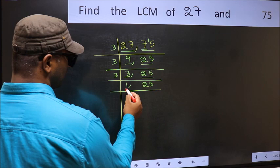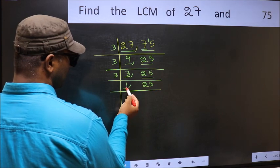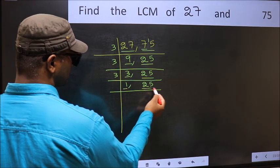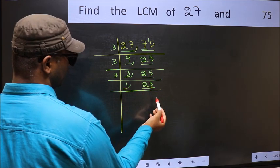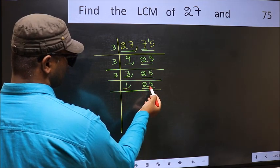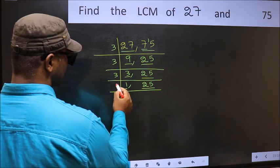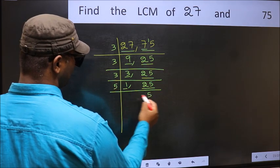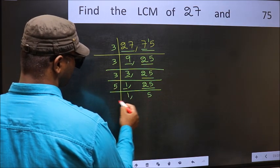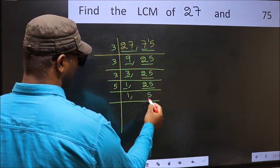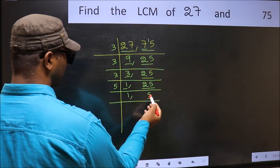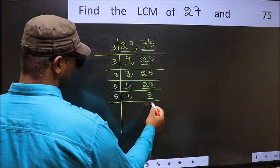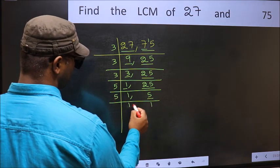Now we have 1 here, so focus on the next number, 25. 25 is 5 times 5. Now here we have 5, which is a prime number. 5 divided by 5 is 1.